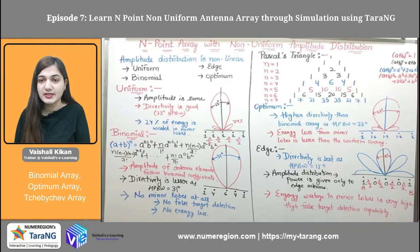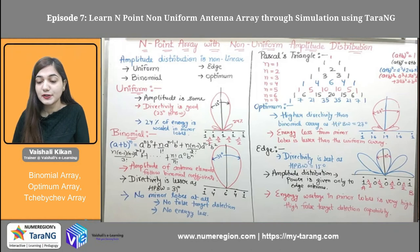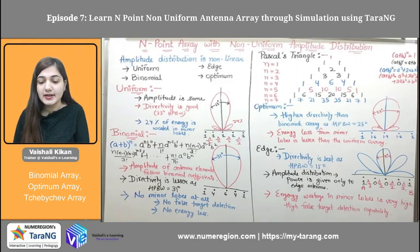Now coming to the Pascal's triangle — I am again showing the Pascal's triangle in the upcoming slide. We can make the Pascal's triangle to find out the amplitude of any point of antenna array. Coming to the optimum antenna array, we have the amplitude of 1, 1.6, 1.9, 1.6, 1. Here we have higher directivity compared to the binomial array. You can see the directivity is 23 degrees, but there are some minor lobes which reduce the energy. There is some energy loss due to the minor lobes plus there could be false target detection in the optimum antenna array.